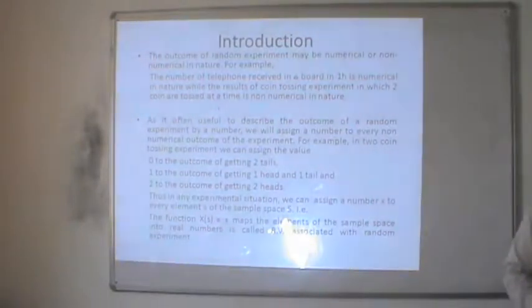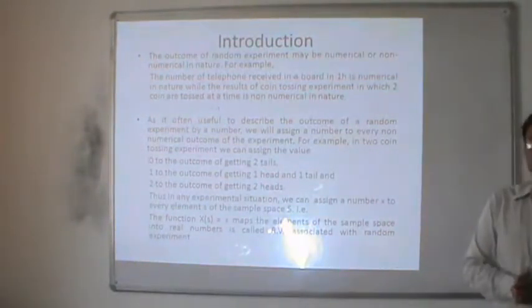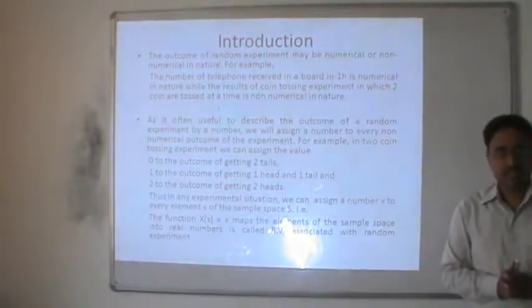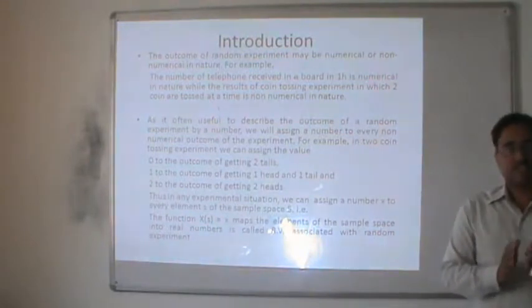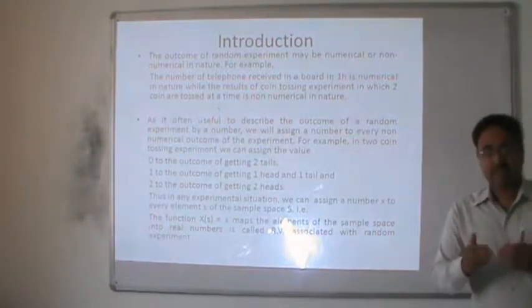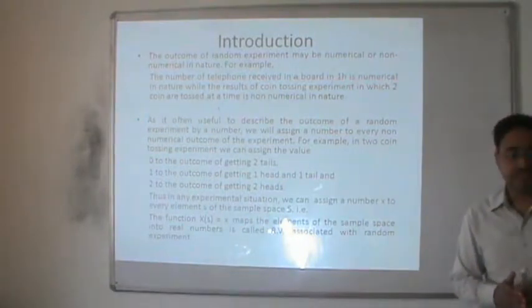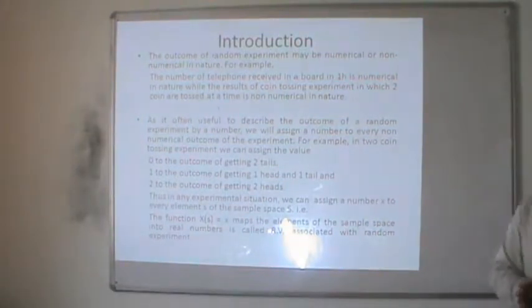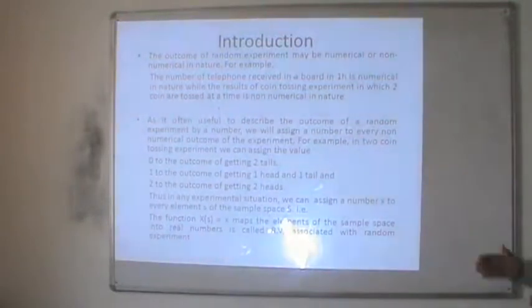In the last lecture we discussed about current probability. In this section we shall discuss random variables and their nature and types. For introduction, the outcome of a random experiment may be numerical or non-numerical in nature.